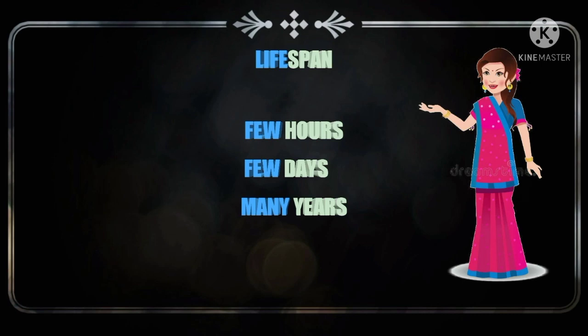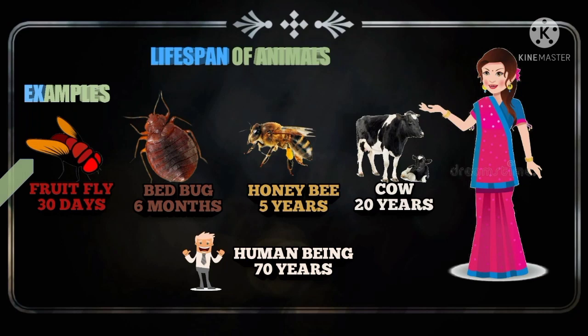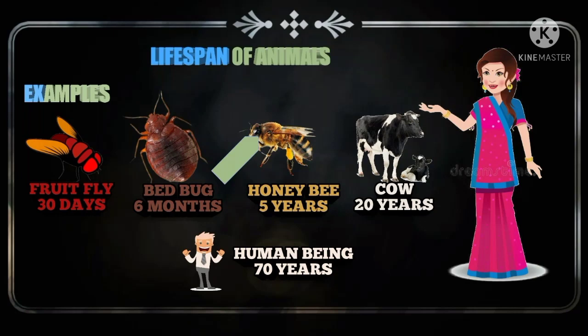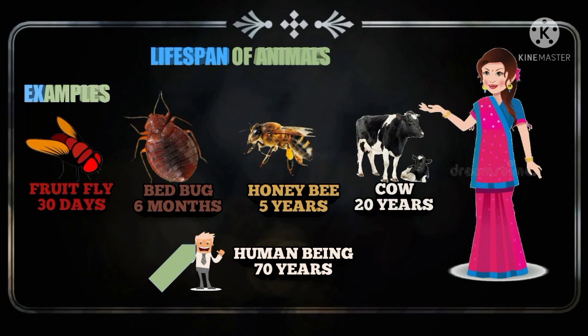First, in animals, for example, the average lifespan of a fruit fly is 30 days. The average lifespan of a bedbug is up to 6 months. The average lifespan of a honeybee is 5 years. The average lifespan of a cow is 20 years. And the average lifespan of a human being is 70 years.